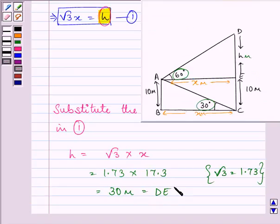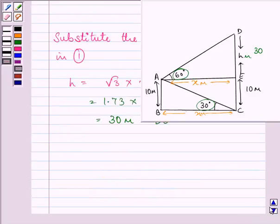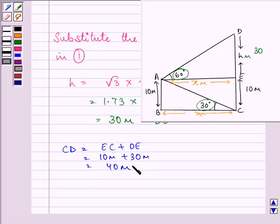We were required to find out the height of the hill. The height of the hill is 10 plus the value of H, which we have found out to be 30. So CD is equal to EC plus DE, that is 10 meters plus 30 meters, that is equal to 40 meters.